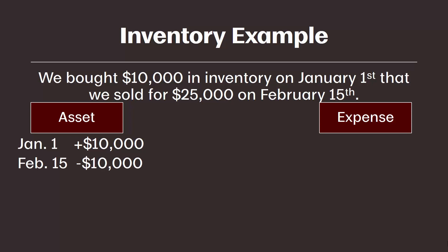On February 15th when we sell the inventory, we need to reduce the inventory balance by ten thousand dollars — the original cost of the inventory. We take ten thousand dollars out of the asset account because we no longer have that inventory; we sold it to a customer. We also need to record the associated expense of ten thousand dollars, which we call cost of goods sold.